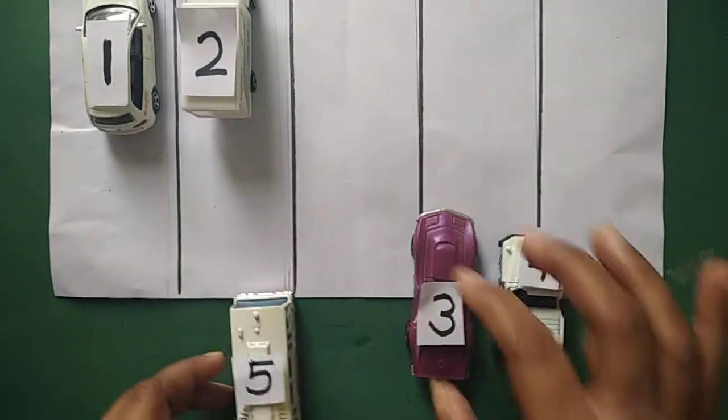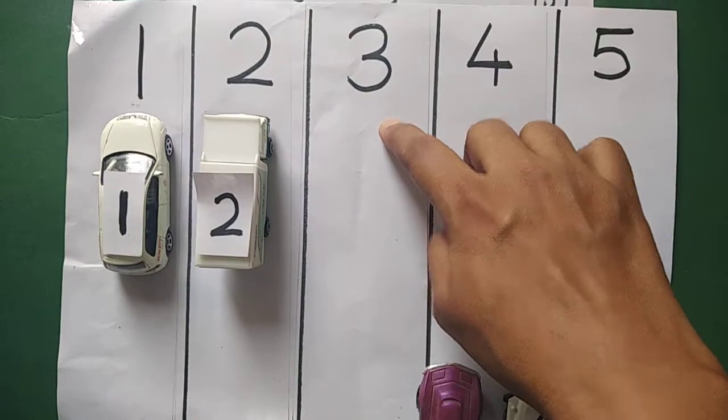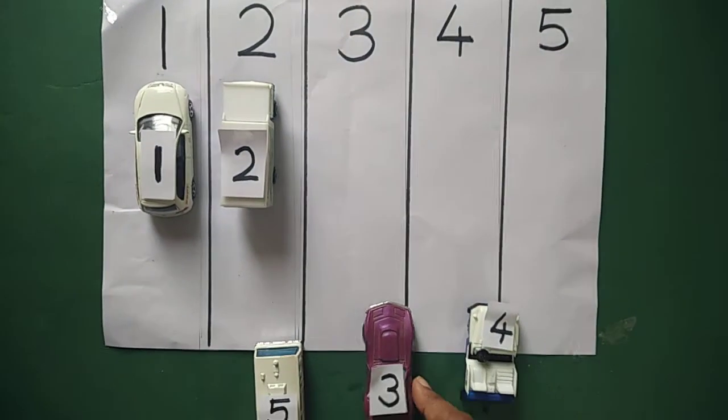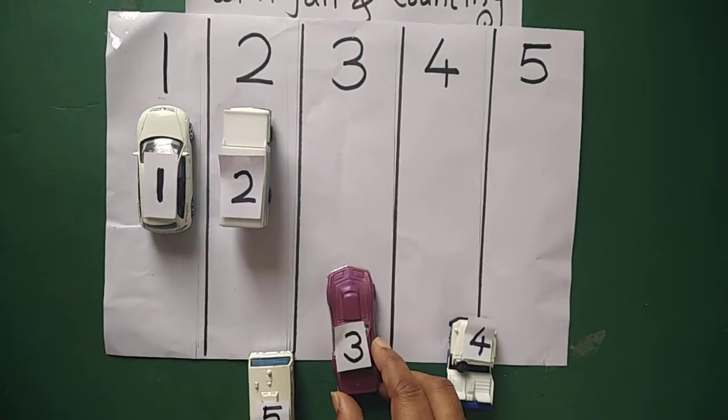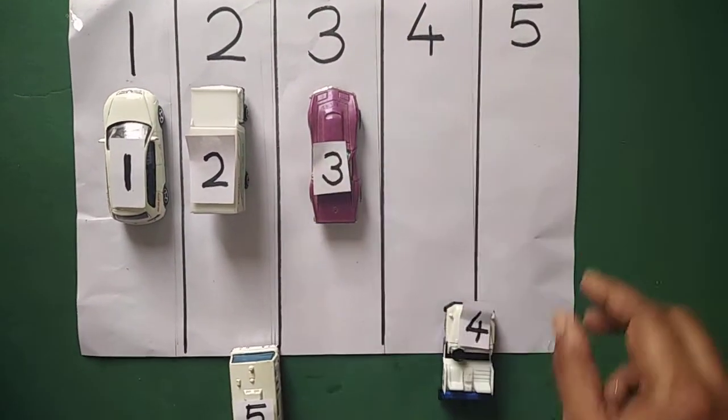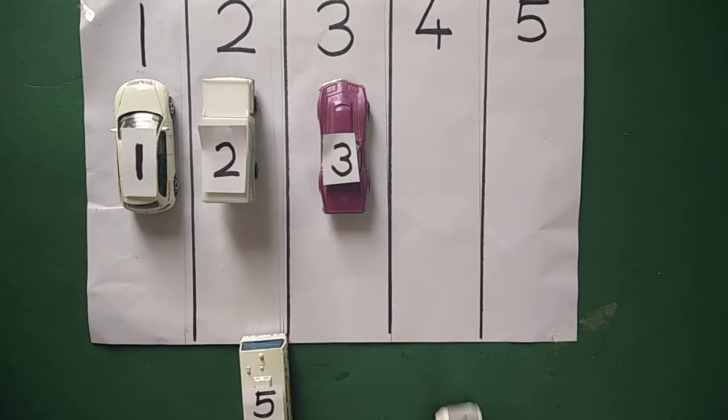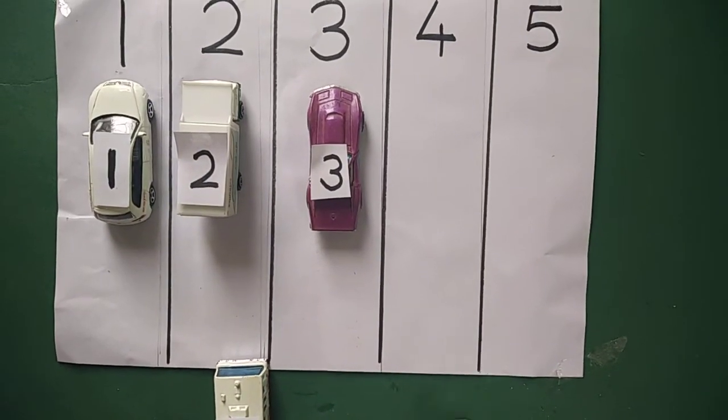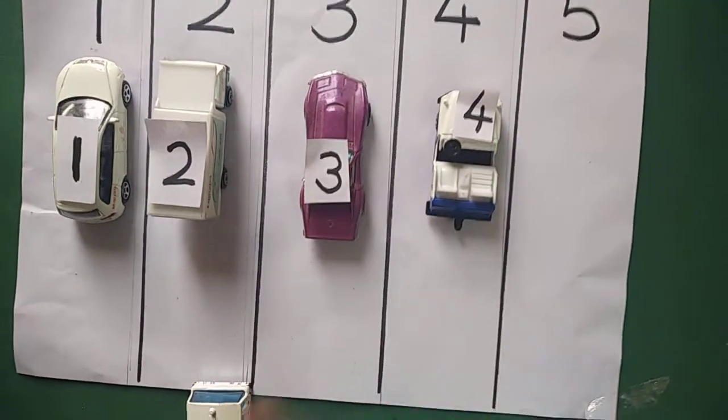Then which number is this? Number 3. So I will park my third vehicle. That is number 3. Then go, go, go and park.